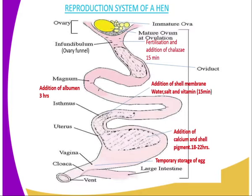At the vagina, the egg temporarily stays, waiting for the hen to lay the egg through the vent. The cloaca extends outward so that it can allow the egg to be laid properly without breaking. It extends outward to release the egg to the nest, preventing the eggshell from being broken.